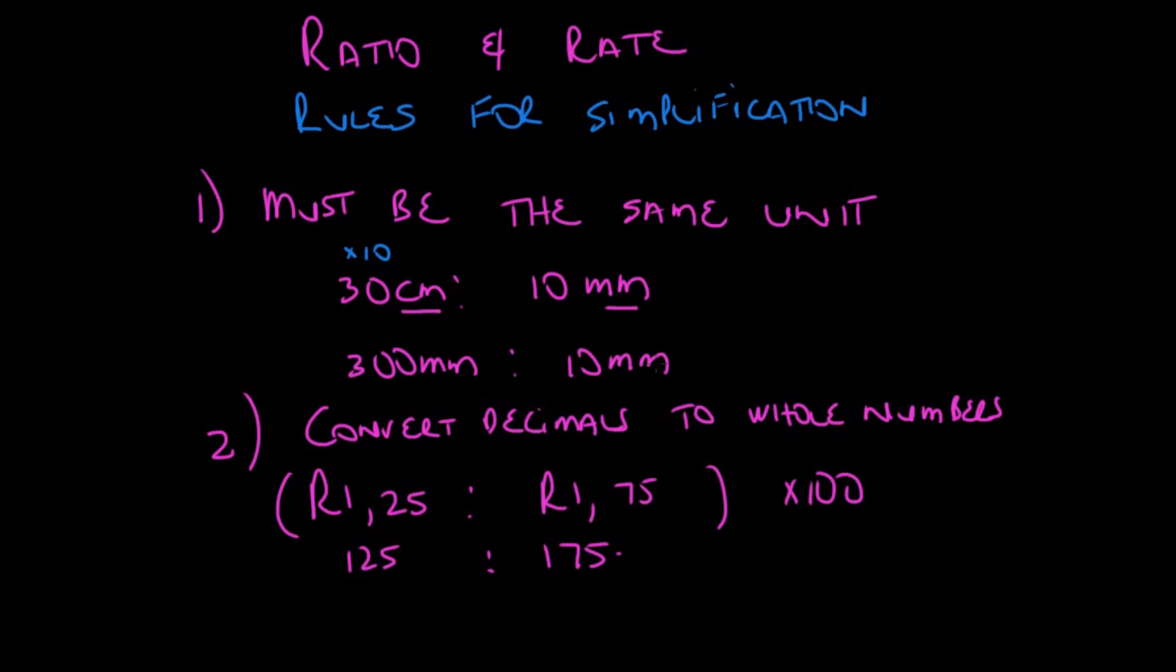The next thing that we need to do is we need to convert decimals to whole numbers. So, if I have 1.25 as to 1.75, I need to multiply out by 100. Why are we multiplying out by 100? Because we have two places after the comma. And we want to convert them to whole numbers. So, that will give me 125 as to 175.